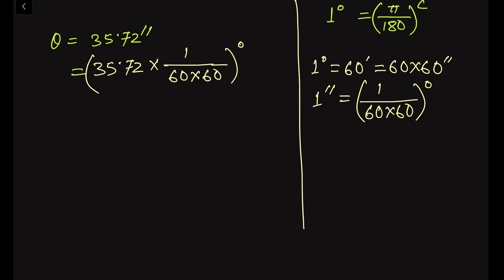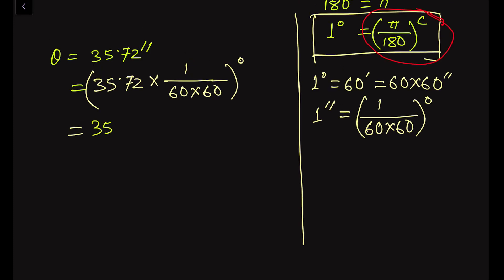Now we have to express this degree value in radian scale. The formula is: one degree equals pi by 180 radians. So to convert theta, we multiply: 35.72 × (1/(60 × 60)) × (π/180). This gives us theta now expressed in radian scale.